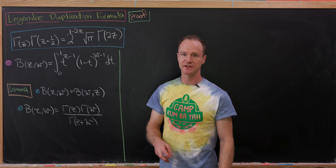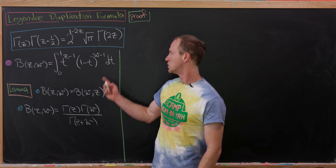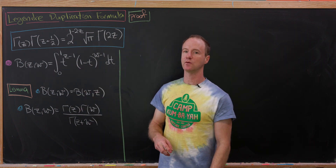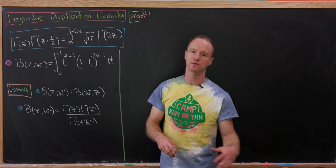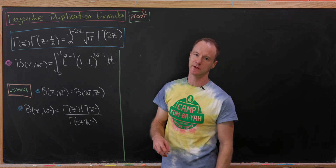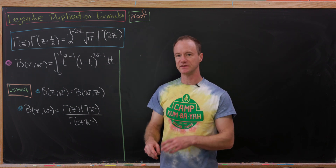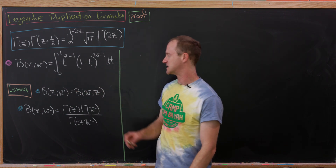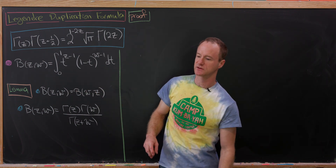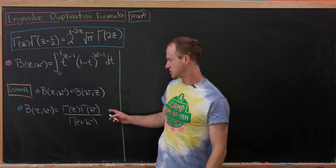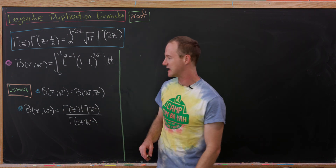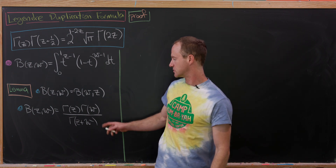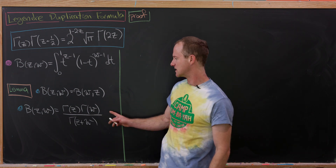One of the main tools here will be something called the beta function, which is defined as follows. B(z, w) is the integral from 0 to 1 of t^(z-1) times (1-t)^(w-1). Via a simple change of variables exchanging t with 1-t, the beta function is symmetric in the two variables. Furthermore, there's a nice relation: B(z, w) = Γ(z)Γ(w) / Γ(z+w).